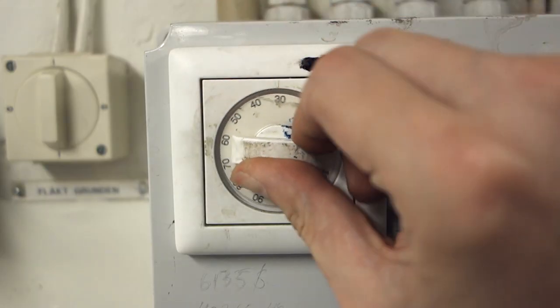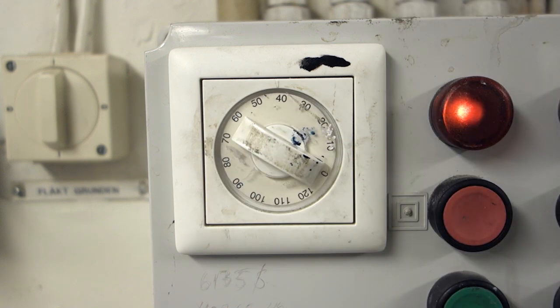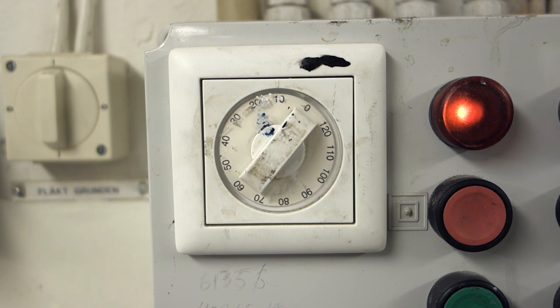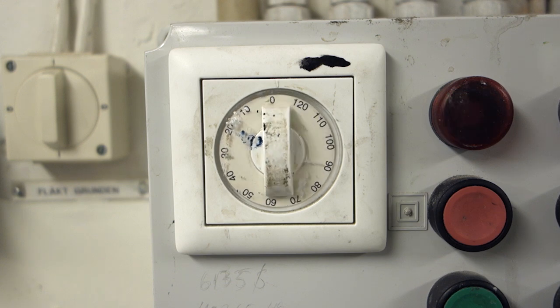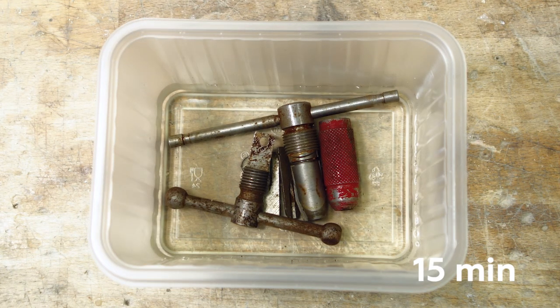Now we wait while the vinegar does most of the heavy lifting for us. An hour should be enough for lightly rusted parts, while you may need longer for heavier rust. Vinegar does a great job at lifting the rust, especially surface rust like this. For more heavy corrosion there are more effective methods, like other chemicals or electrolysis.